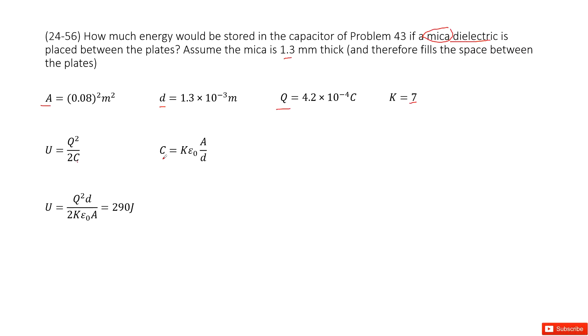As we know, capacitance is K epsilon naught A over D. You can see K is the dielectric constant there. So all the quantity is given. We insert C in this function. And then we get the function for U, the energy for the capacitor. Input all the given quantity. You will get the answer there. Thank you.